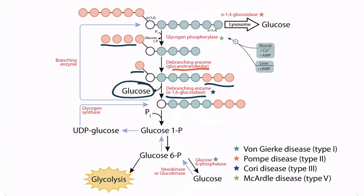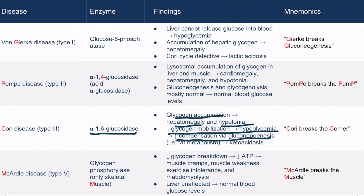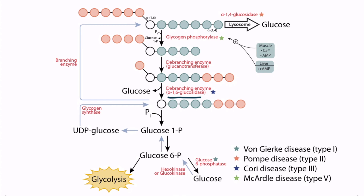A deficiency of alpha-1,6-glucosidase results in Cori disease, also known as glycogen storage disease type 3. Cori disease is caused by a deficiency of alpha-1,6-glucosidase, resulting in a decreased ability to break down the final branches of glycogen. As non-functional glycogen accumulates in muscle, it results in hypotonia; as it accumulates in the liver, it results in hepatomegaly. Because glycogen can't be utilized to its maximum capacity, cells become more easily starved of glucose, and patients can develop hypoglycemia. The body compensates by increasing gluconeogenesis, and the increased metabolism of fats to supply the gluconeogenic pathway with carbons results in ketoacidosis — a very unique finding among the glycogen storage diseases. Cori disease can be remembered with the phrase 'Cori breaks the corner,' as alpha-1,6-glucosidase cleaves the last branching residue — the corner — of glycogen.